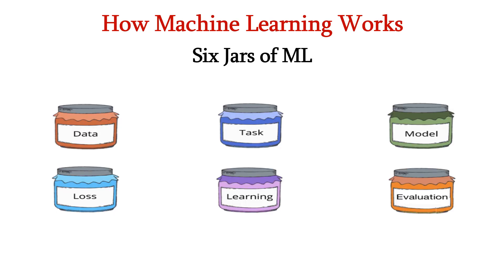Now, let us see how machine learning works. We have six jars of machine learning, namely data, task, model, loss function, learning algorithm and evaluation. Let us see about these jars one by one.